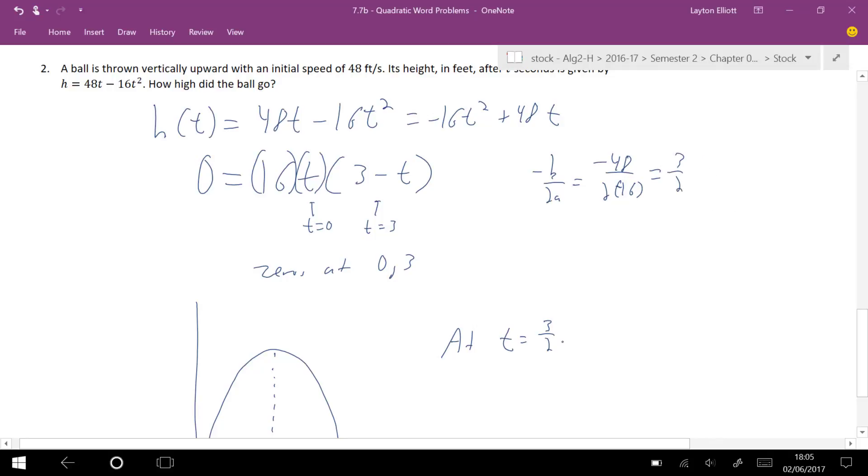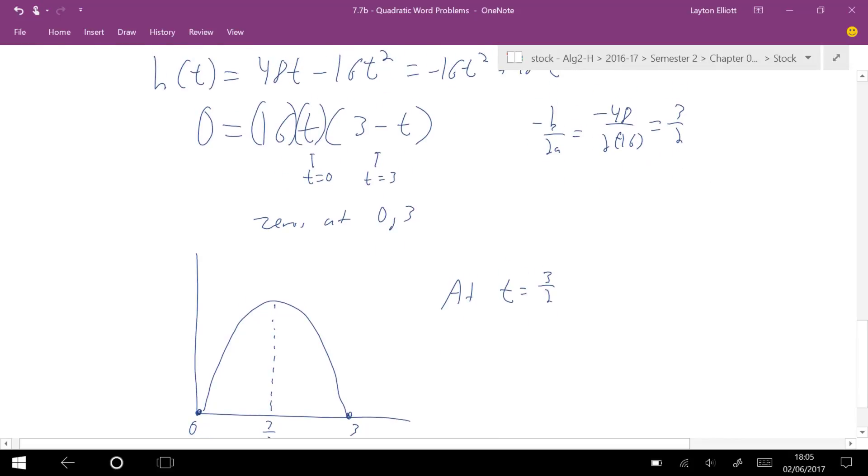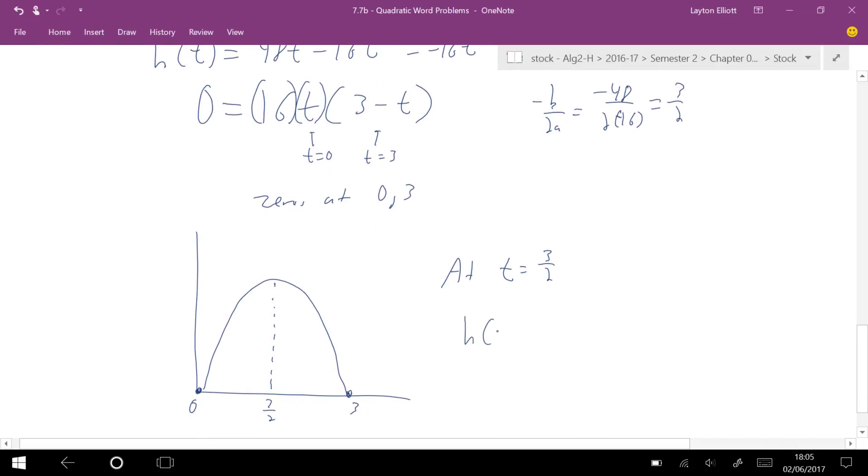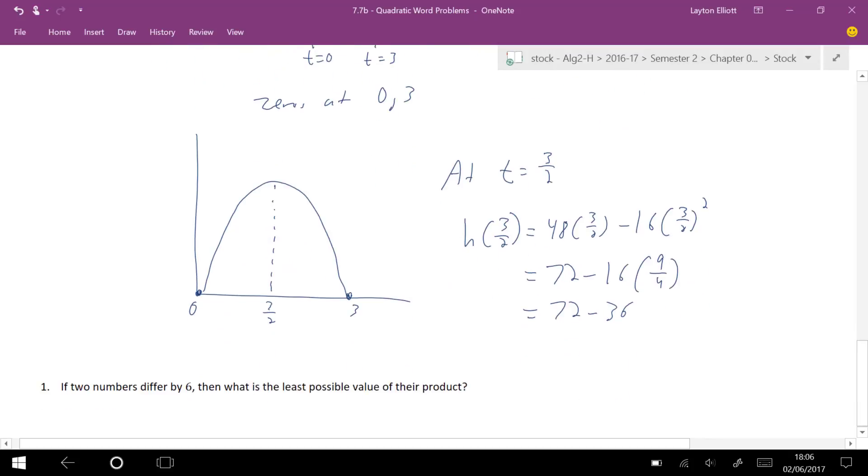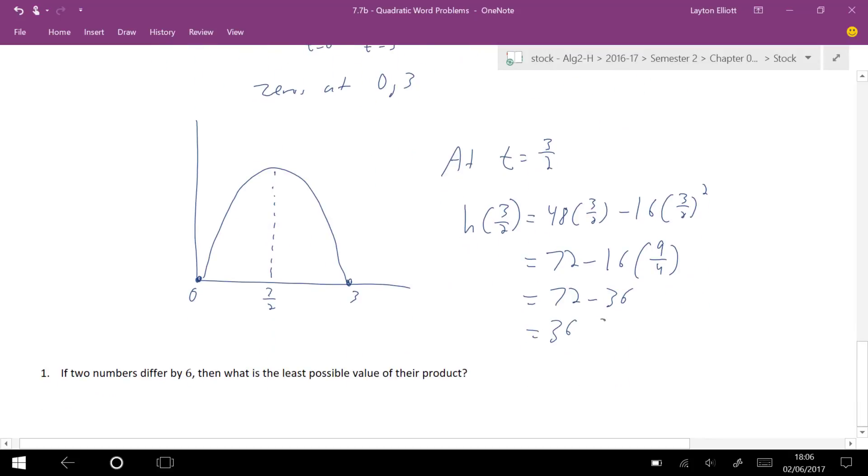Put that there. So at t equals 3 halves, I could go ahead and plug 3 halves in. I could say, what is h of 3 halves? And that would tell me what the height is at that point. So h of 3 halves is 48 times 3 halves minus 16 times 3 halves squared. Half of 48 times 3 is 72, 72 minus, this would be 16 times 9 fourths, which is 72 minus 36, which is 36 feet.